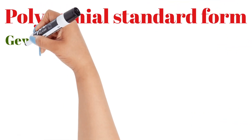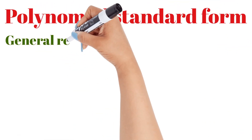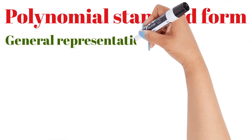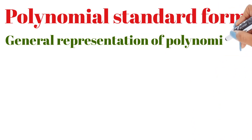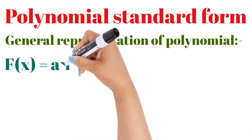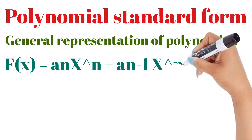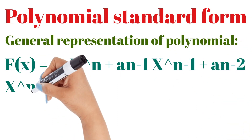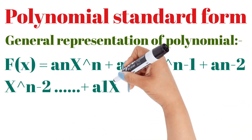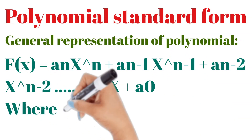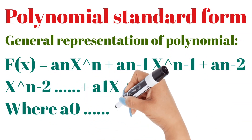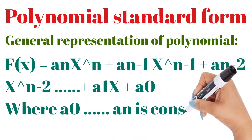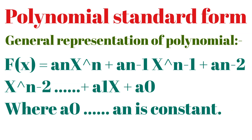Polynomial standard form — the general representation of a polynomial. f(x) = aₙxⁿ + aₙ₋₁xⁿ⁻¹ + aₙ₋₂xⁿ⁻² + ... + a₁x + a₀, where a₀ and aₙ are constants. All the a₀, a₁, ... aₙ values are constants, and this is the general representation.